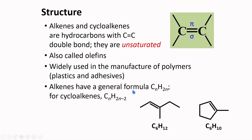Alkenes have a general formula of CnH2n. For example, here is a 6-carbon alkene with molecular formula C6H12. For cycloalkenes, the general formula is CnH2n-2, exemplified here by a compound containing a double bond. Comparing these two molecular formulas, the cycloalkene has two fewer hydrogen atoms.